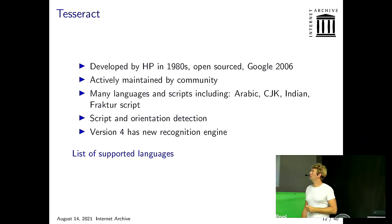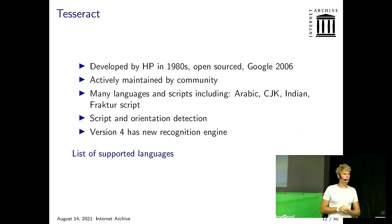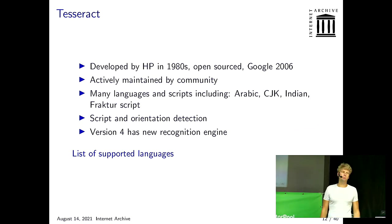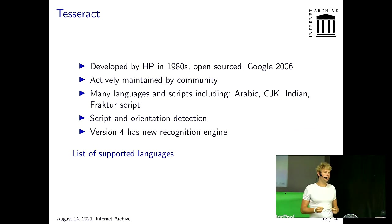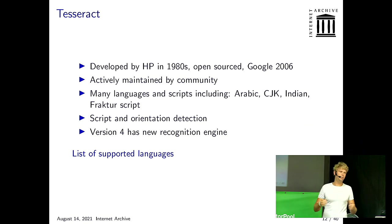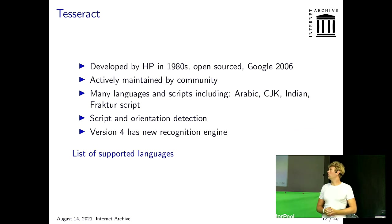Tesseract was developed by Hewlett Packard in the 1980s, open sourced, then Google started working on it and it got quite a lot better — they added a neural network back end much better than the previous engine. It supports a lot of languages, which is very cool because we get a lot of different content. It supports English, Arabic, Cyrillic, Russian, Bulgarian, Chinese, Japanese, Korean, all the different Arabic and Indian scripts and languages — something we weren't able to do before with our closed source software.